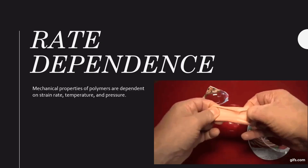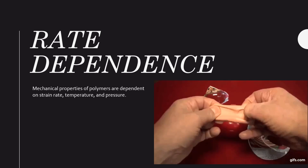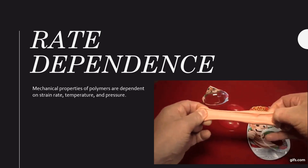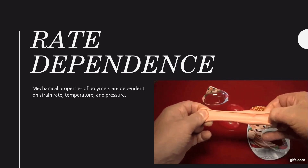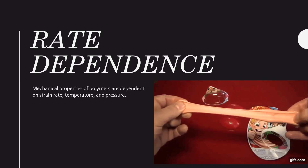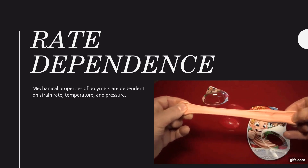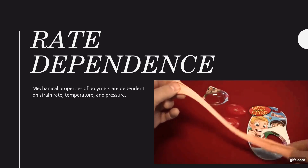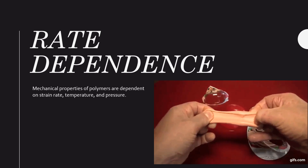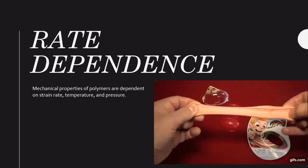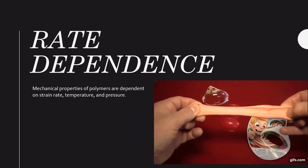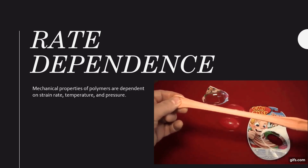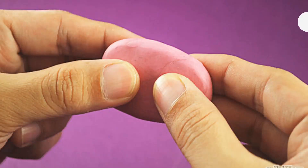Now let's look at rate dependence and how the Tg effects relate to energy absorption. Whether a polymer behaves rubbery or glassy affects how much energy it absorbs — similar to the ductile-to-brittle transition in impact testing. When impacting these polymers, they can either absorb more energy and deform, or absorb less energy and just break and shatter. The mechanical properties of polymers also depend on strain rate, temperature, and pressure.